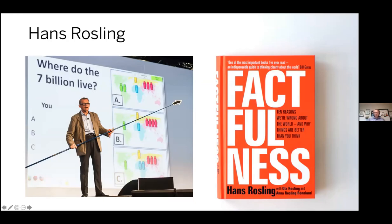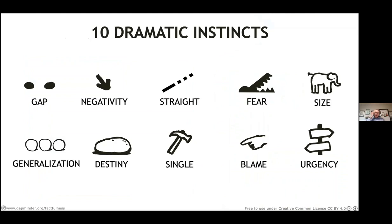This is a picture of Hans at a Tableau customer conference in London. He used the Socratic method, asking 'Where do the 7 billion people live? A, B, or C?' — and he had this amazing pointer to make live interactions with data more engaging. The cool thing about his book Factfulness is that not only do you hear the stories he told about data, but he codifies what he learned over 30 years into guidelines and rules of thumb that anyone can use to tell stories with data and have better conversations with data. Hans says there are 10 dramatic instincts people inherently have that limit the impact of data.